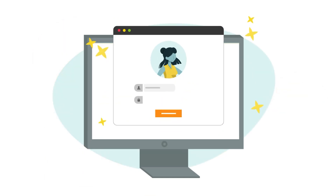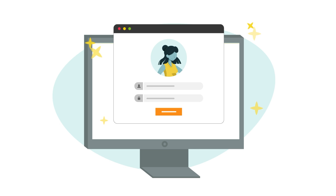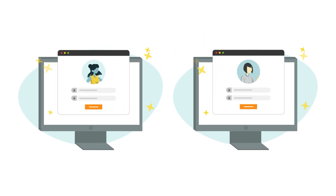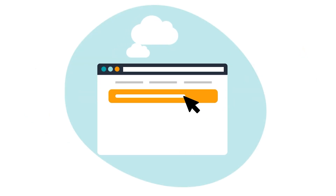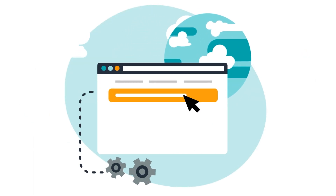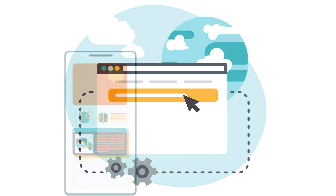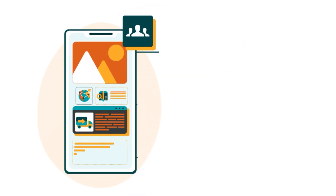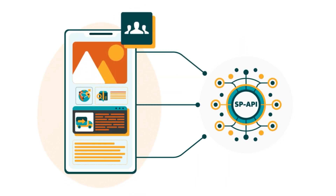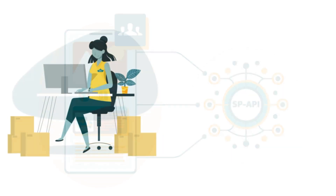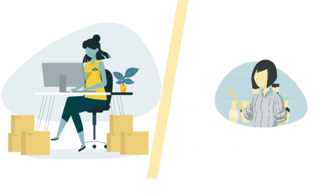If the seller or vendor isn't signed in to Seller Central or Vendor Central, a sign-in page appears. The type of OAuth Authorization URI you'll construct will be based on the type of public application you want to integrate with SP API — for a seller or for a vendor.